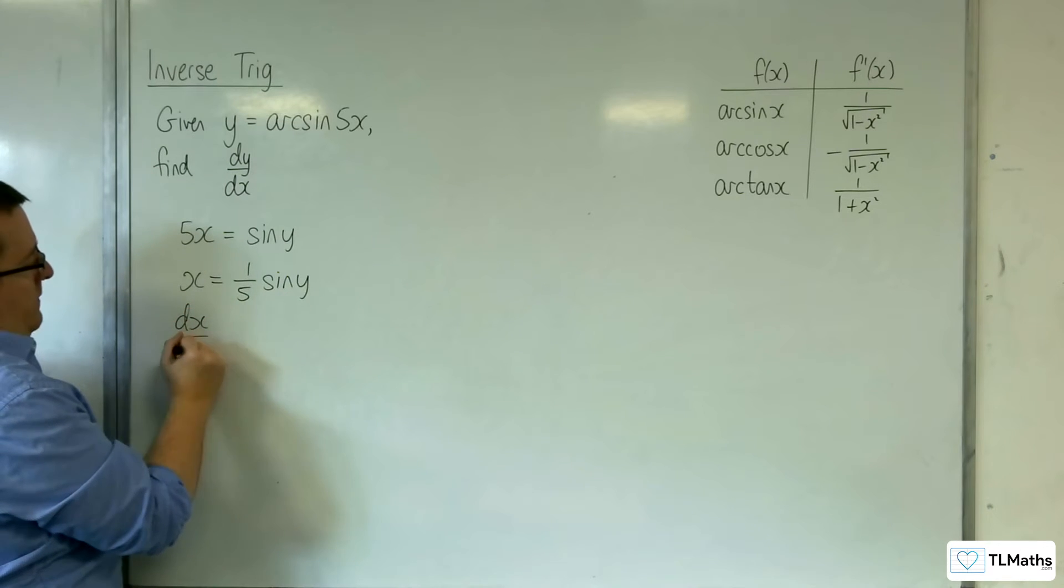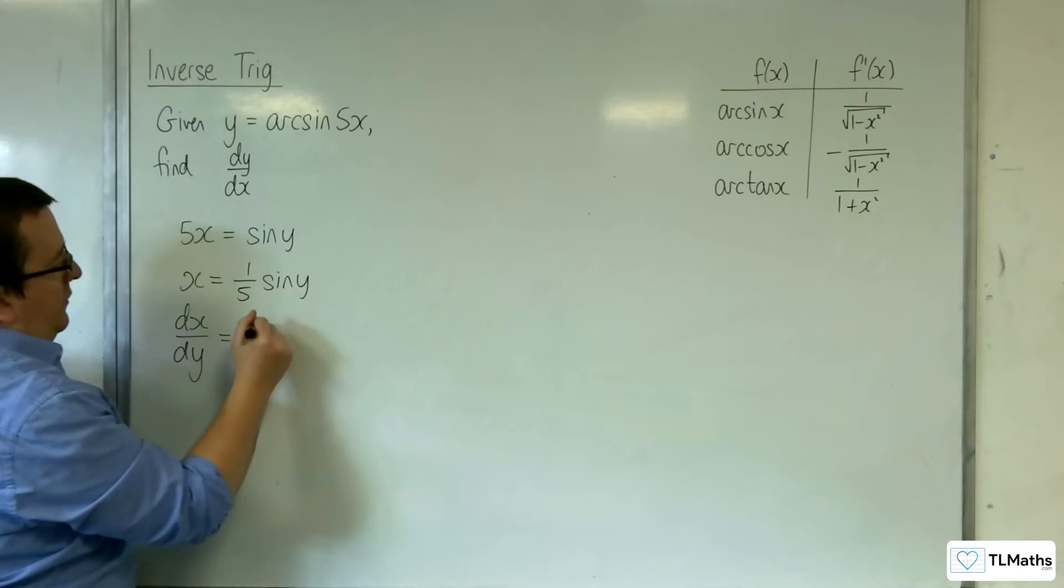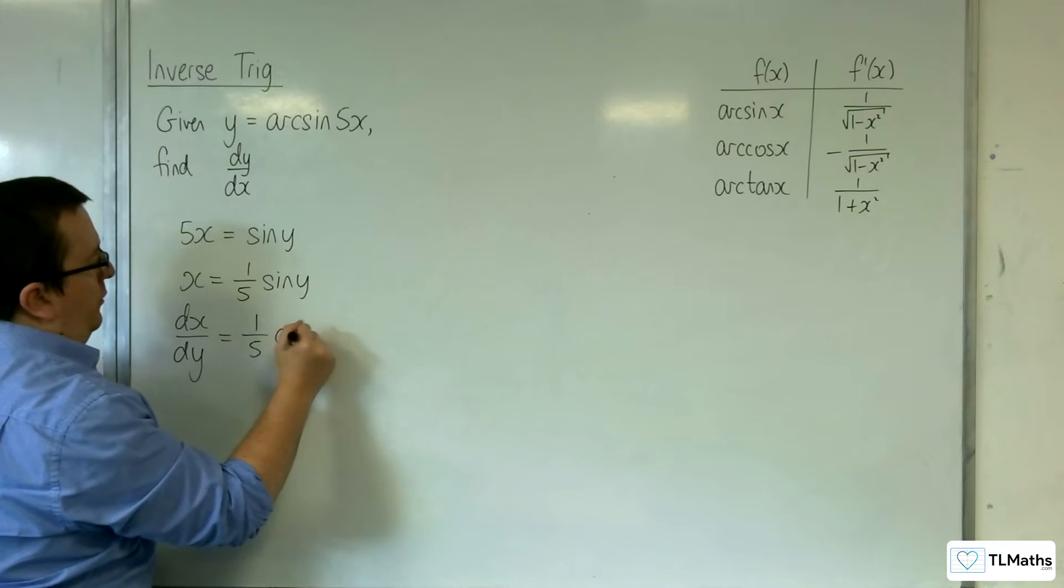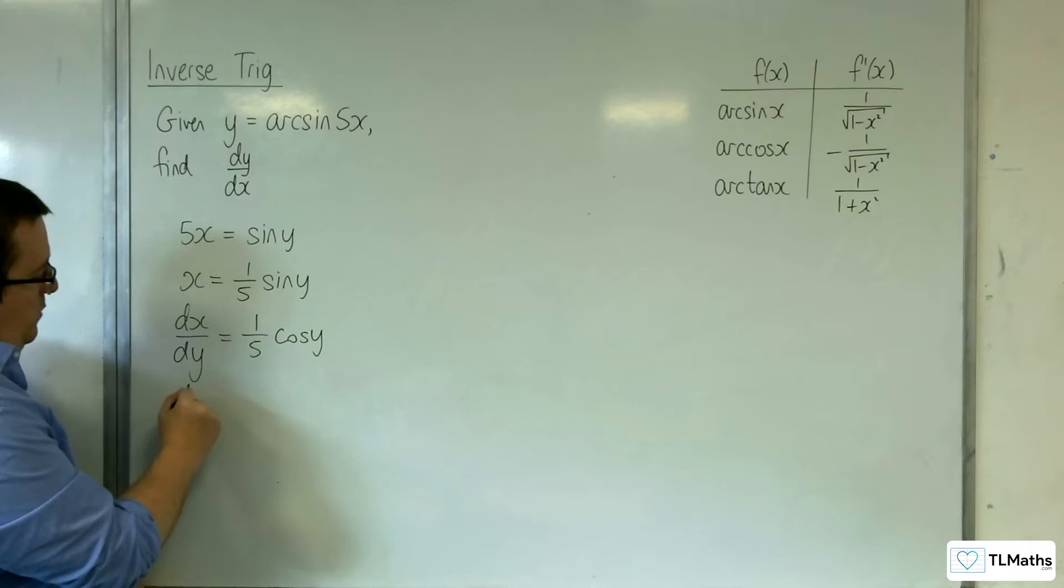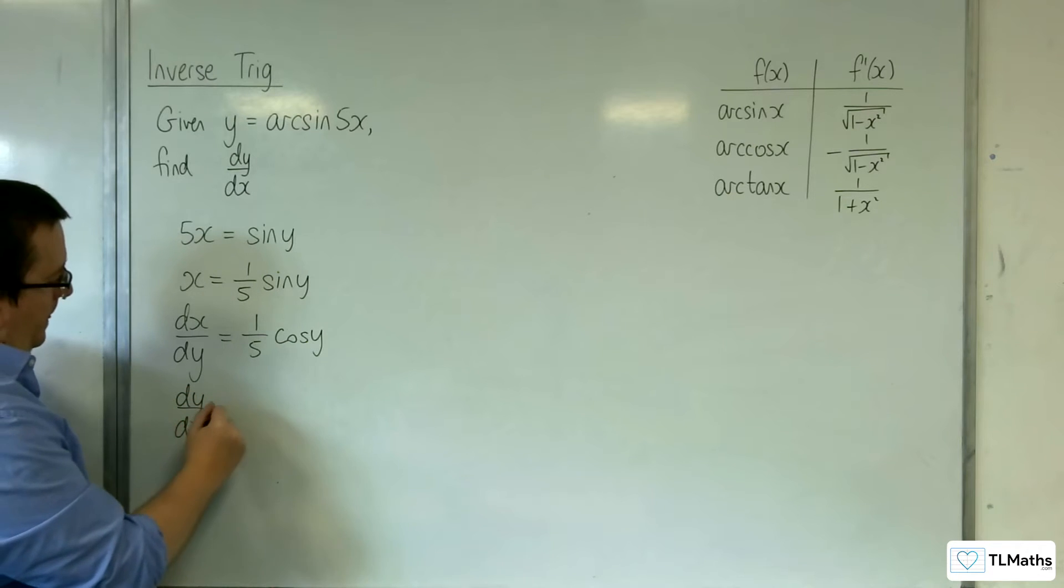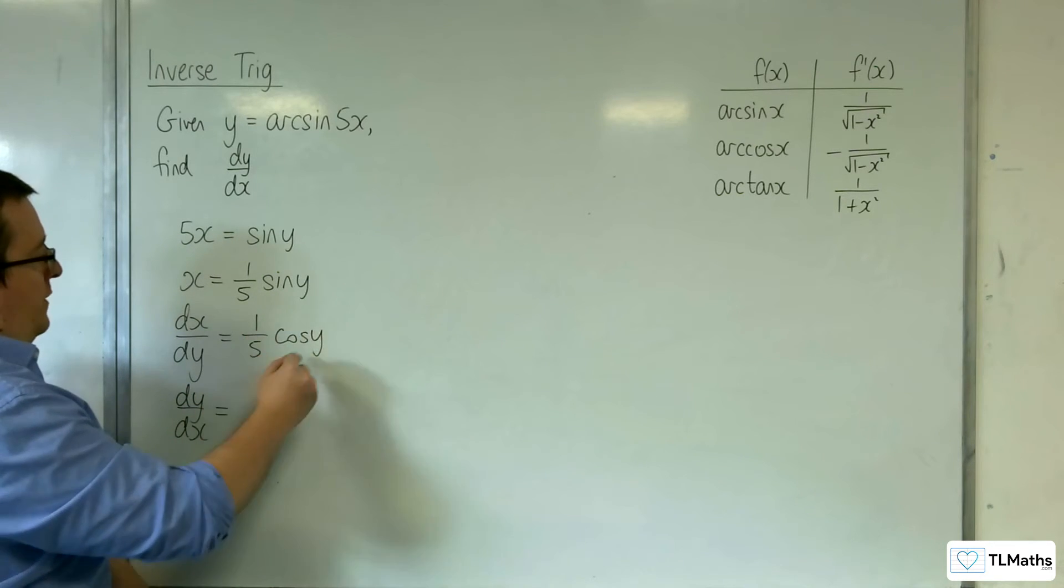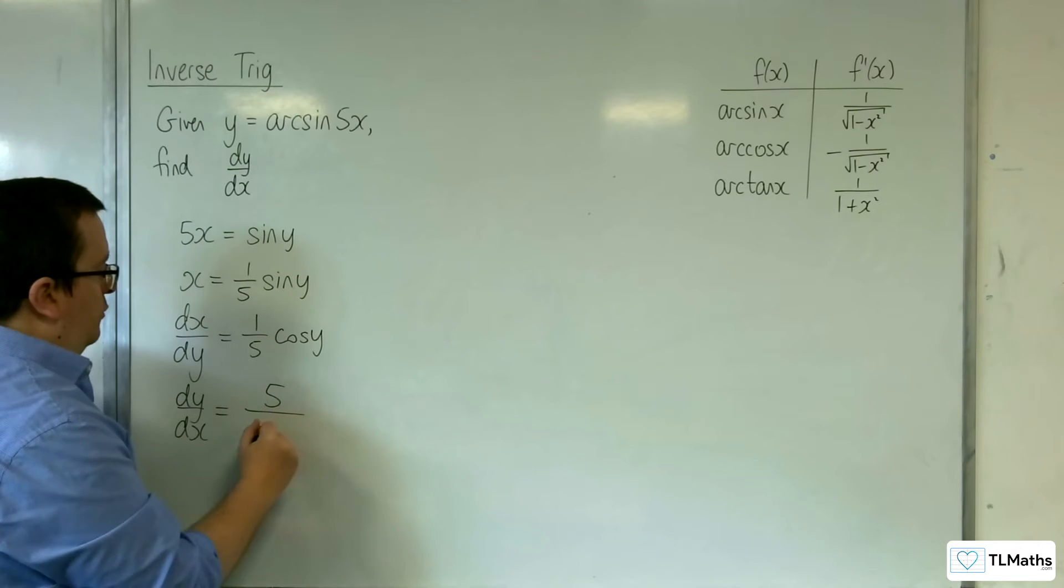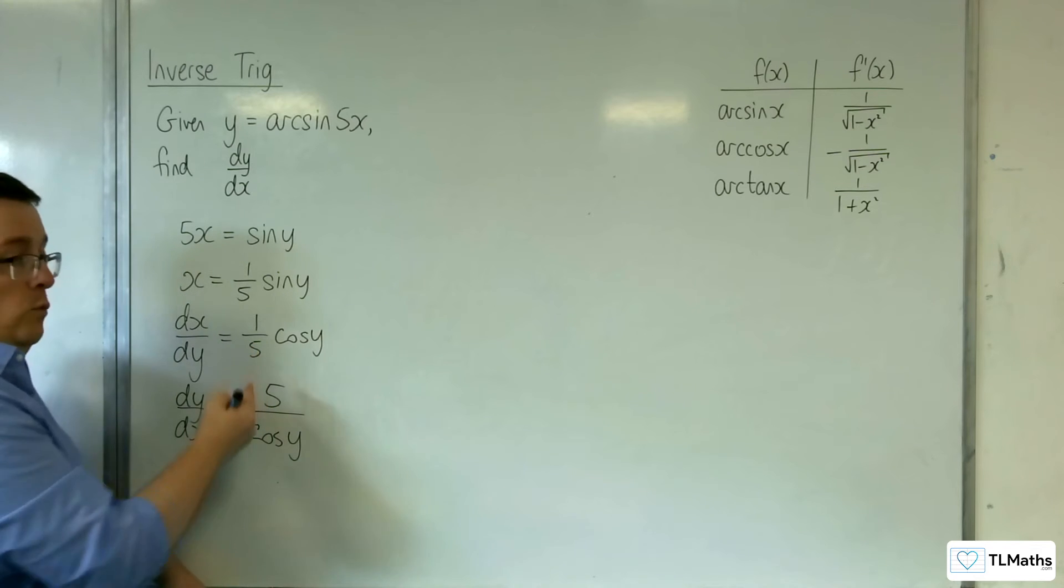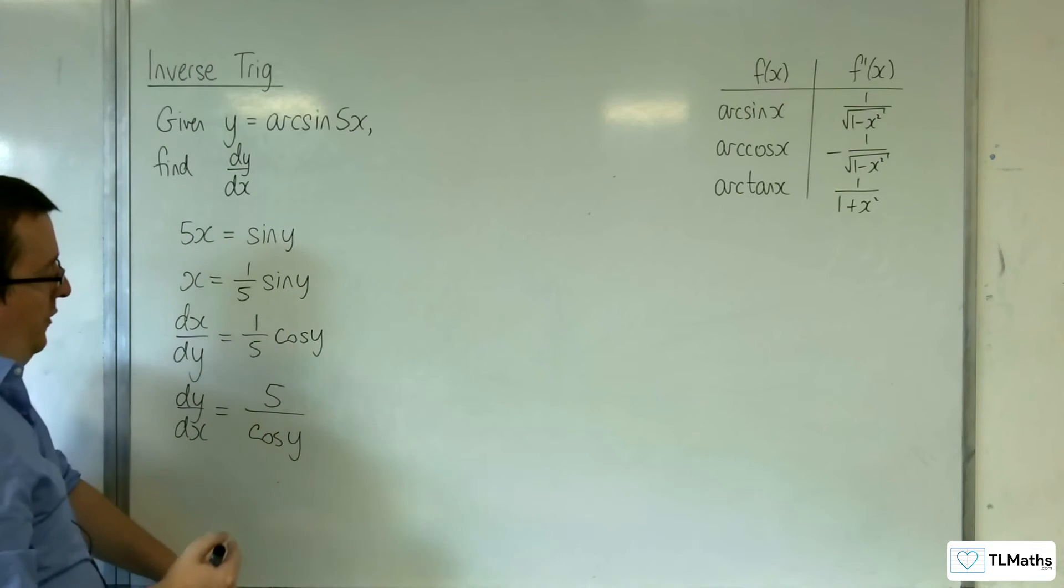You then differentiate, so dx by dy is going to be one-fifth cosine of y. So that means that dy by dx is equal to one over this, which is going to be 5 over cosine of y. So one over the one-fifth and one over the cosine y.